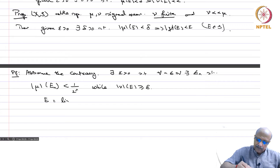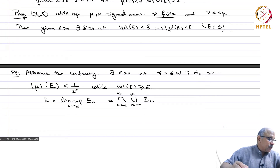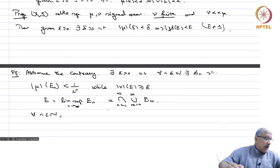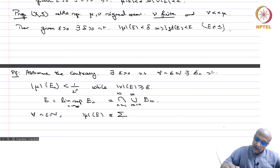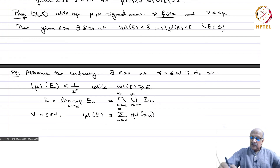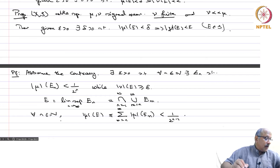Take E = lim sup_{n→∞} E_n. Recall this equals the intersection from n=1 to infinity of the union from m=n to infinity of E_m. For every n in N, |mu|(E) ≤ Σ_{m=n}^∞ |mu|(E_m), since it is a measure, and |mu|(E_m) < 1/2^m. Summing this geometric series gives |mu|(E) < 1/2^{n-1}, and this is true for every n. Therefore |mu|(E) = 0.